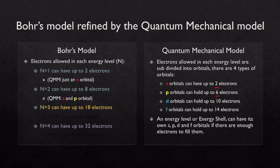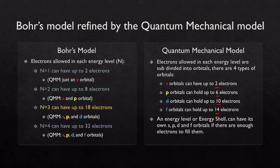Energy level 3, which Bohr said could hold up to 18 electrons, will have S, P, and D orbitals. And then energy level 4 will have S, P, D, and F orbitals — because 2 plus 6 plus 10 plus 14 equals 32 electrons. This is just showing a refinement of what Bohr thought as far as the number of electrons that could exist in each energy level, which he was correct about. The quantum mechanical model came and said there are all these different orbitals, and electrons have to be organized into them. Energy levels contain different kinds of orbitals.